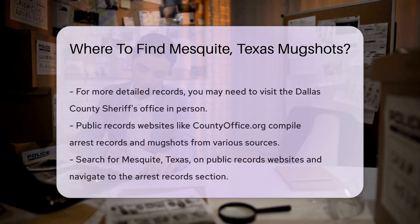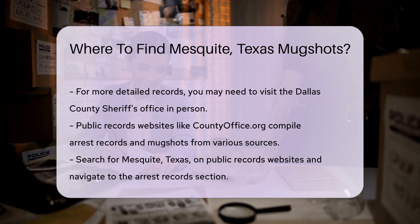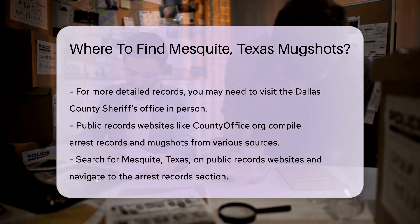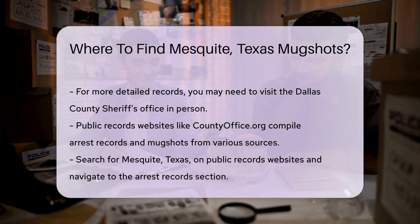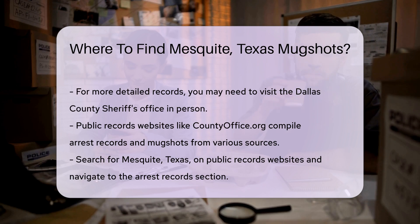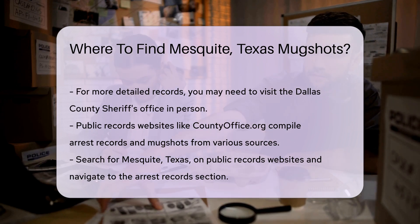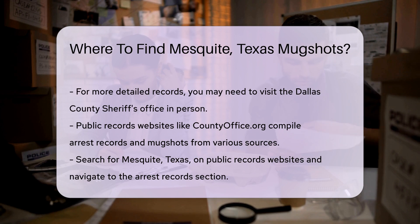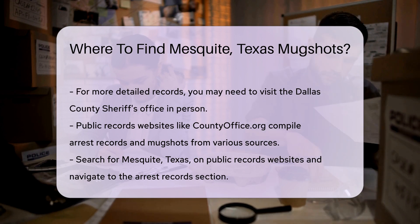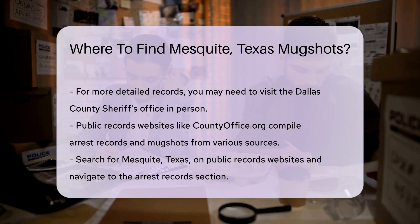Public records websites can also be helpful. Websites like countyoffice.org compile public records from various sources. They often include arrest records and mugshots. Simply search for Mesquite, Texas, and navigate to the arrest records section.